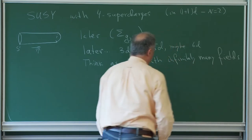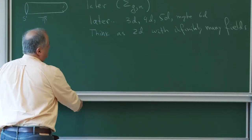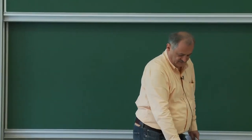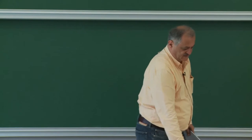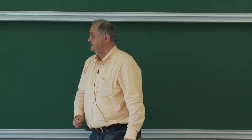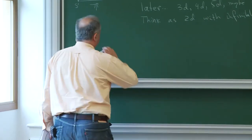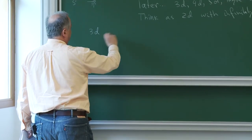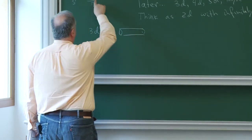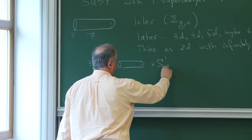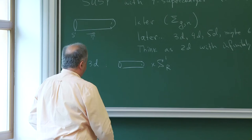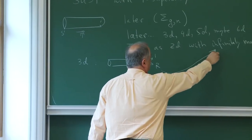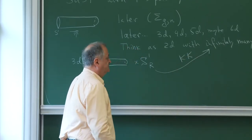Let me say a few words about what I mean by this. I actually designed these lectures to be very elementary. The way you think about this is: if you are in three dimensions, you can think about three-dimensional space to be this cylinder times a circle of some radius R. That three-dimensional theory, viewed in terms of the theory on this one, will have infinitely many fields, which are usually called Kaluza-Klein modes. And they will be massive.